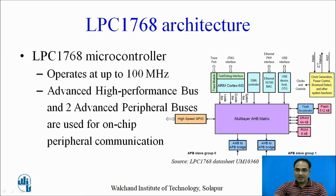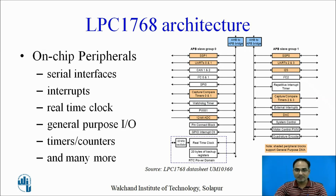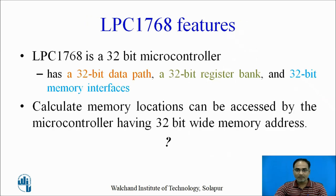This microcontroller also comes with clock generation logic. You can program this microcontroller to run at a maximum of 100 MHz. These are the on-chip peripherals: some serial interfaces are available, external interrupts, a separate RTC real-time clock, general purpose IOs, timer counters, and other peripherals are available for the user to design any embedded system. Let us learn these features one by one.